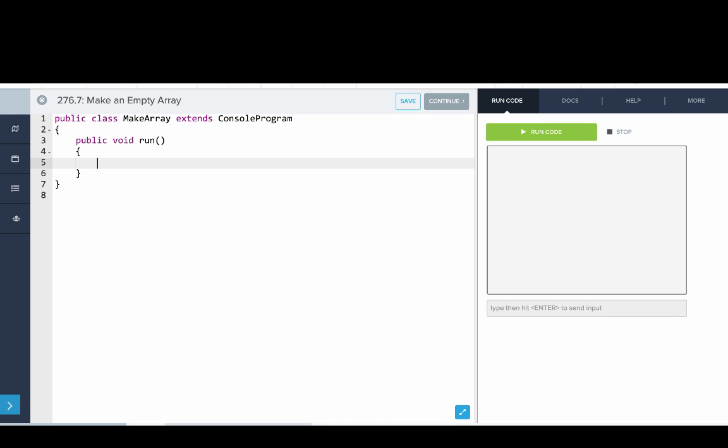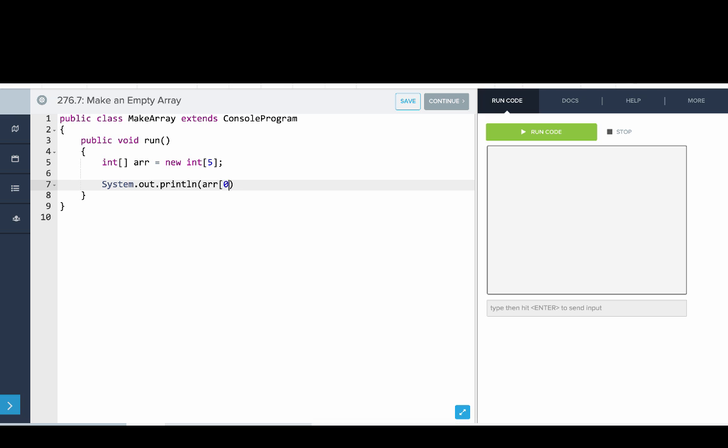Next, we'll look at making an empty array. So we'll make an int array called ar, and we'll say it's new int array with five spots. And what we'll do is we'll just print out the value at ar of zero. So we haven't actually set any of the values yet, so we can see the default value.